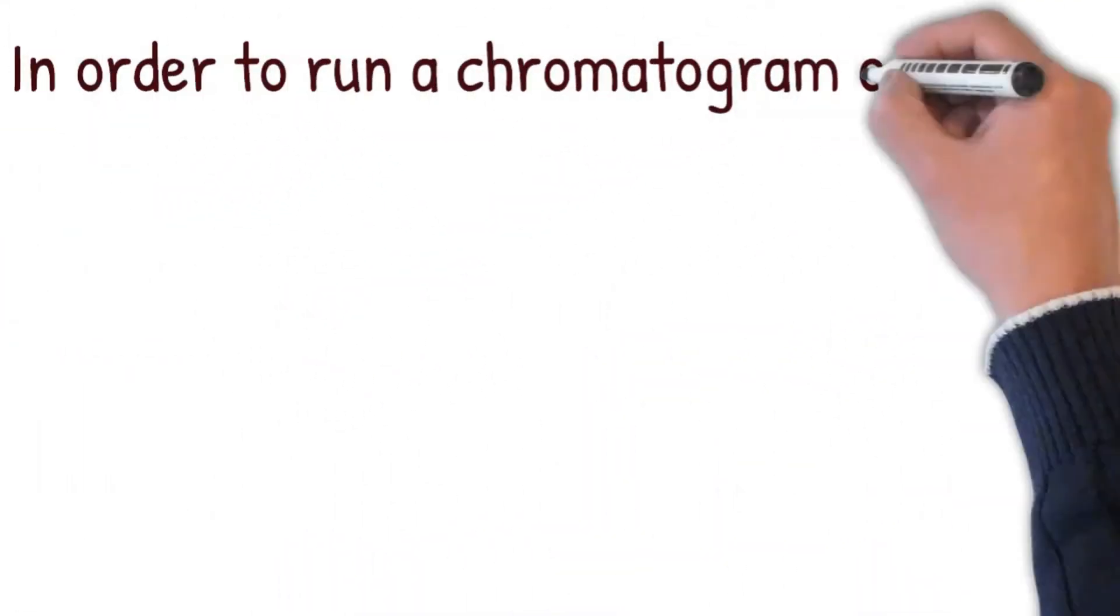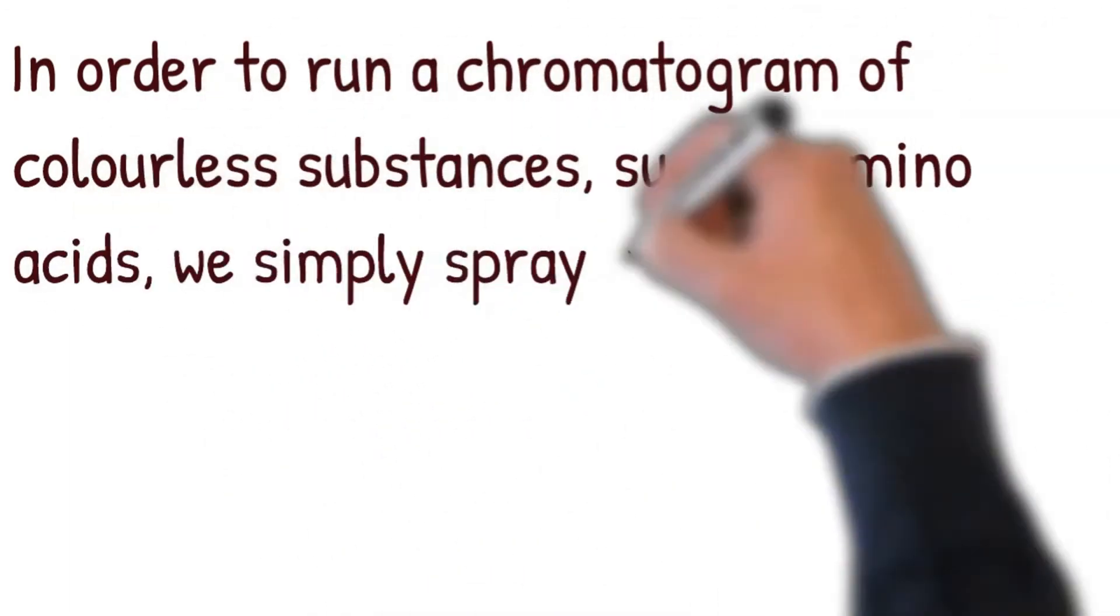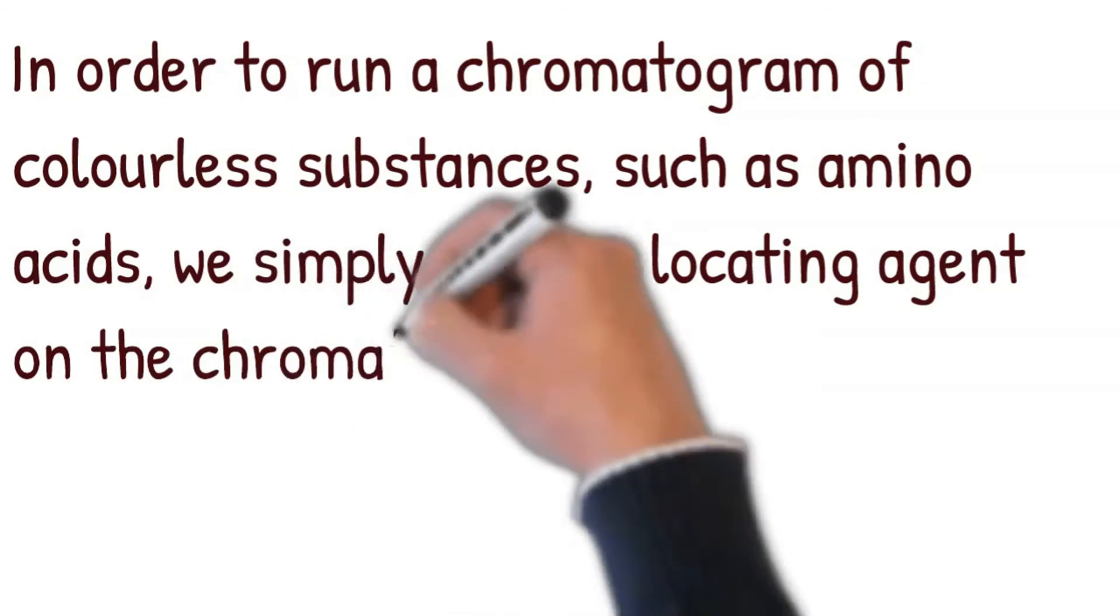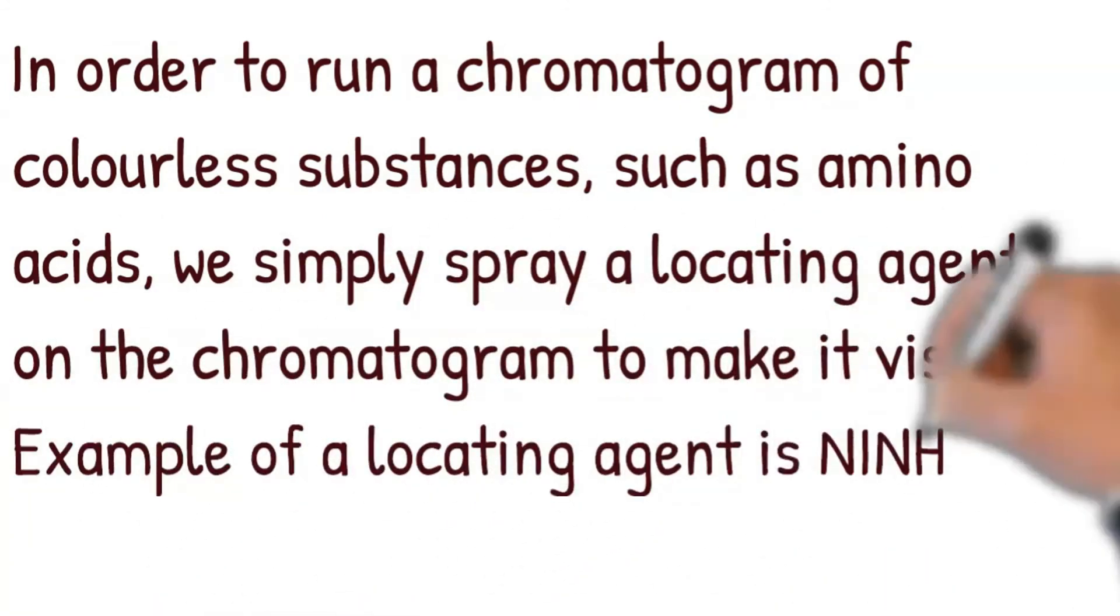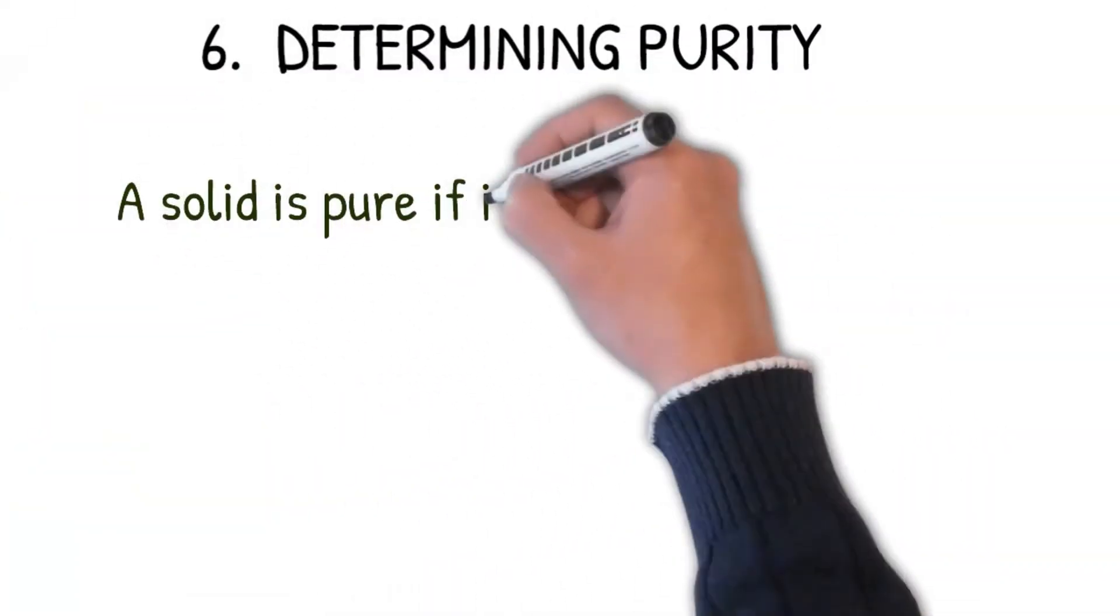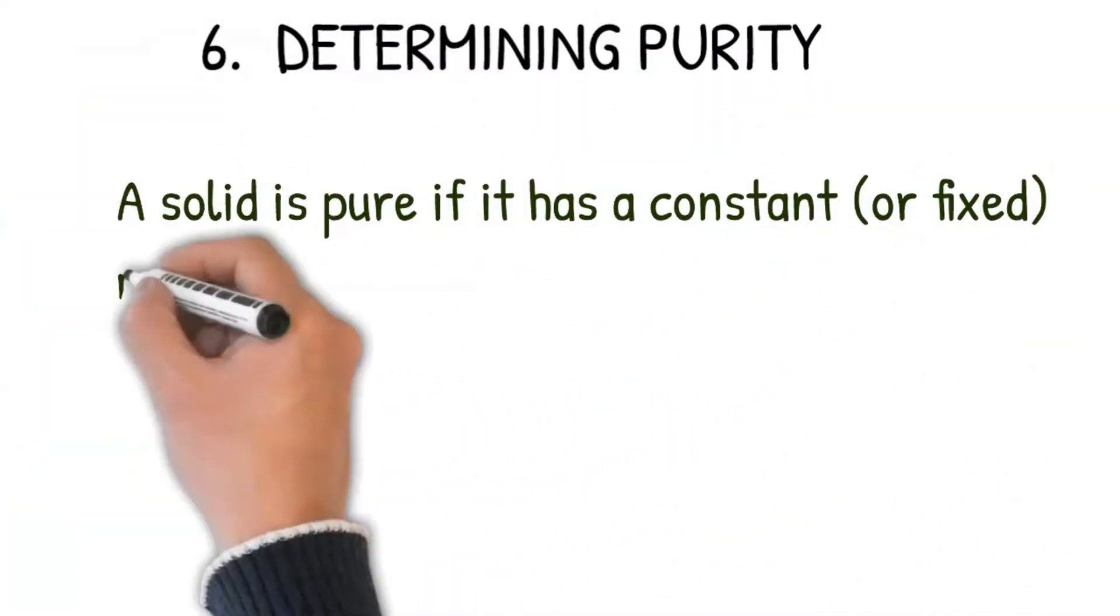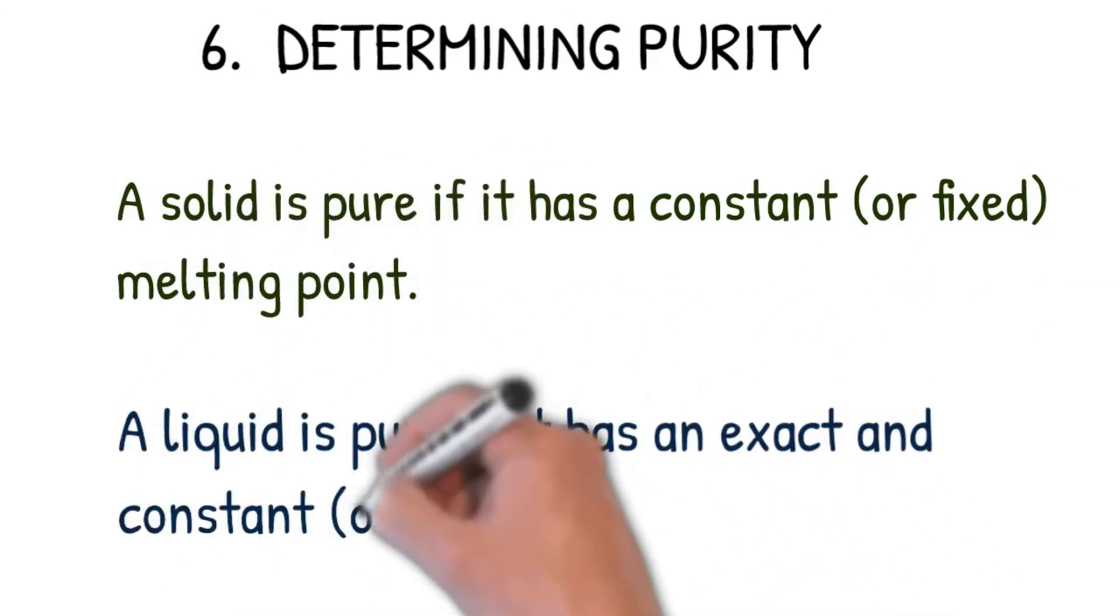In order to run a chromatogram of colorless substances such as amino acids, we simply spray a locating agent on the chromatogram to make it visible. An example of a locating agent is ninhydrin. Determining purity: a solid is pure if it has a constant or fixed melting point. A liquid is pure if it has an exact and constant or fixed boiling point.